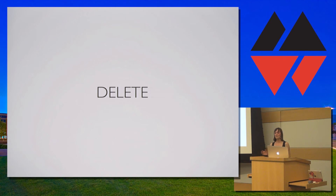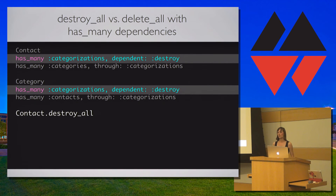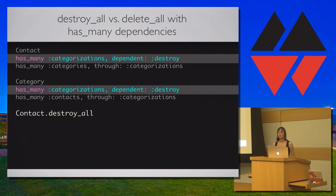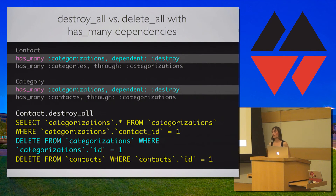Now for delete — my favorite of the CRUD functions because of the interesting problems I ran into. To discuss delete, we first need to cover the differences between delete_all and destroy_all, and how dependency and association settings affect their behavior. In cases where you're deleting a model through destroy_all and the dependency is set to destroy_all, delete_all, or destroy, the contact with all associated categorizations will be removed. destroy_all removes contacts individually and fires callbacks when a dependency is specified — you can see associated categorizations are selected, removed, and then the parent contact is deleted.